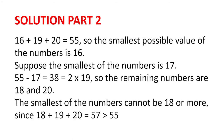Now 16 plus 19 plus 20 is 55. So the smallest possible value of the numbers is 16. Why? Because if it were any smaller, then the sum of the three numbers would have to be less than 55, because the maximum of the remaining two numbers is 19 plus 20, which is 39. And 55 minus 39 is 16. So when 16 is the smallest of the numbers, there is one solution: 16, 19, and 20.